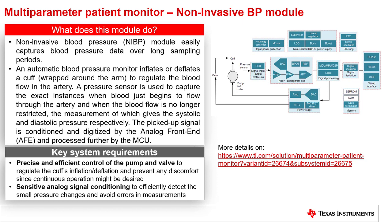The key system requirements for the NIBP module are: precise and efficient control of the pump and valve, to regulate the cuff's inflation and deflation and prevent any discomfort since continuous operation might be desired; and sensitive analog signal conditioning, to efficiently detect small pressure changes and avoid errors in measurement. A common block diagram for such NIBP modules is also shown in this slide.